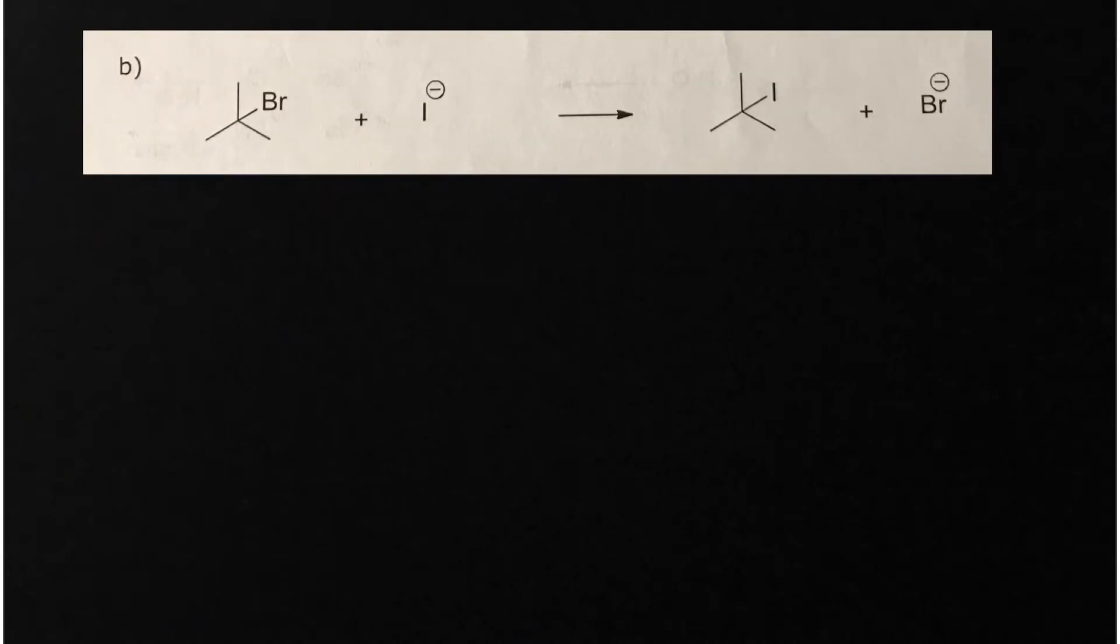For part B this is a tertiary alkyl halide and because of steric hindrance this must proceed by an SN1 reaction mechanism. This is a two-step procedure. Bromide is a good leaving group so we want to sever this bond and what that's going to make is a stable, relatively speaking, tertiary carbocation. We've lost bromide and now we have iodide which is a nucleophile and that's going to attack the carbocation to give you the final reaction product.